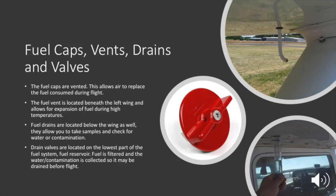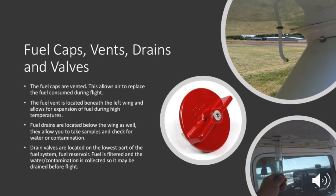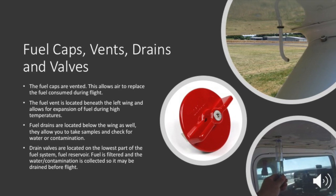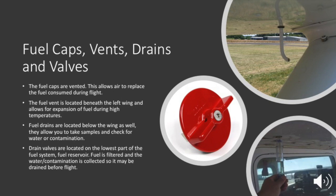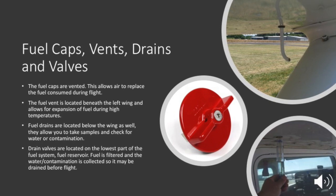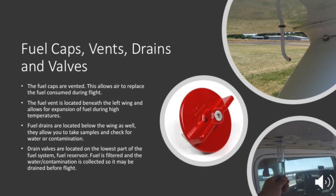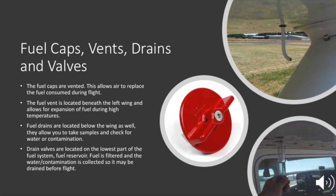Now I am going to discuss fuel caps, vents, drains, and valves. The fuel caps, as shown to your right, are vented. This allows air to replace the fuel consumed during flight. The fuel vent is located beneath the left wing and allows for expansion of fuel during high temperatures.